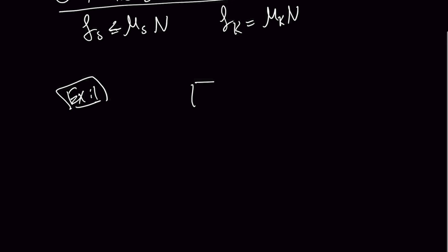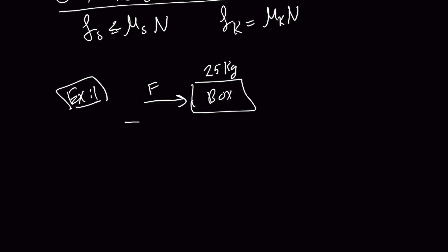Example number one: we have a box which weighs 25 kilograms, and we are going to be pushing the box with a force F on the ground. The box is moving at a constant velocity. This is very important — a constant velocity means the net force is zero.